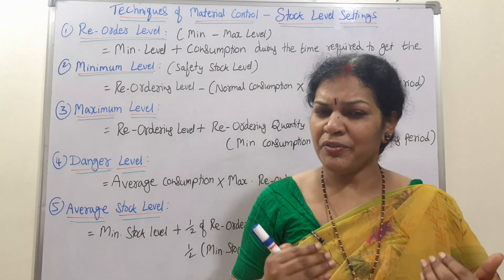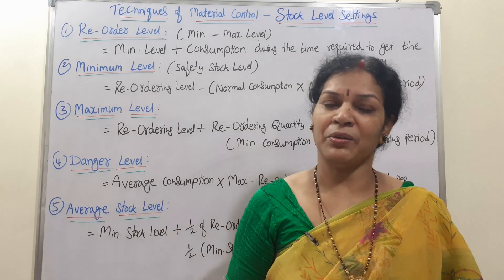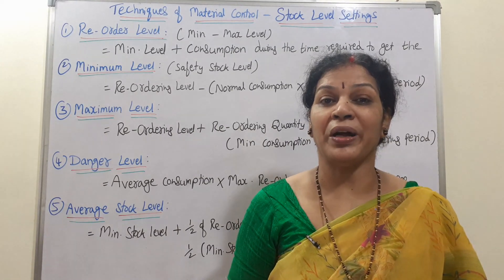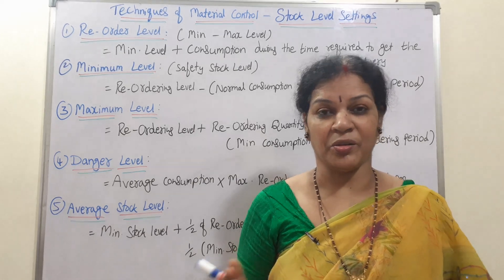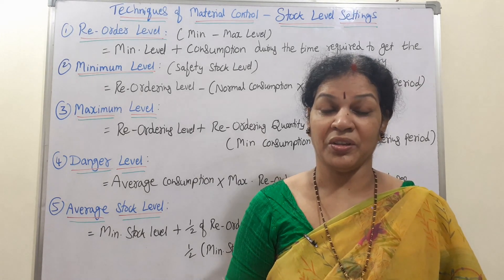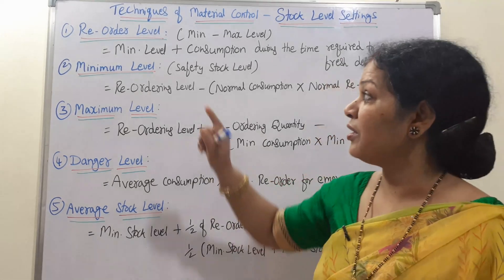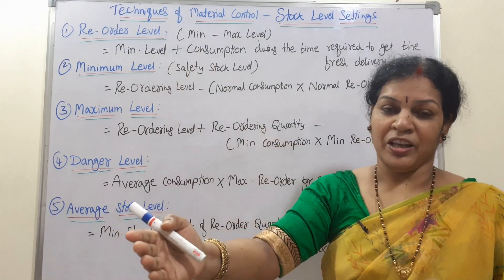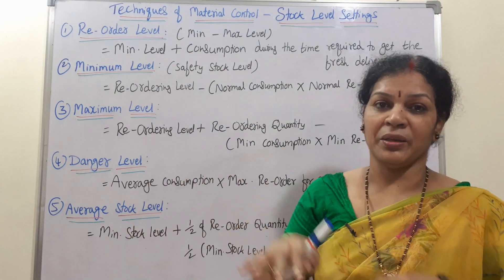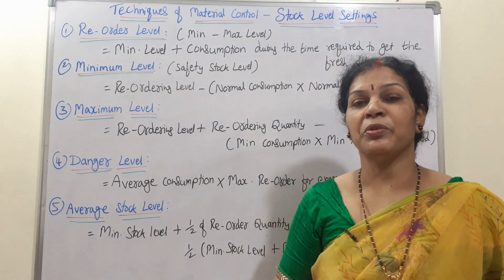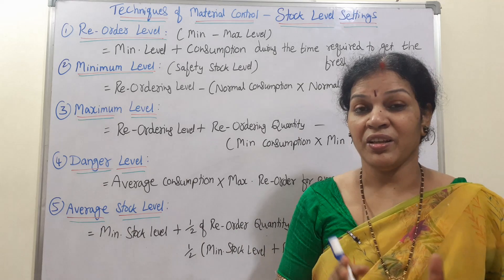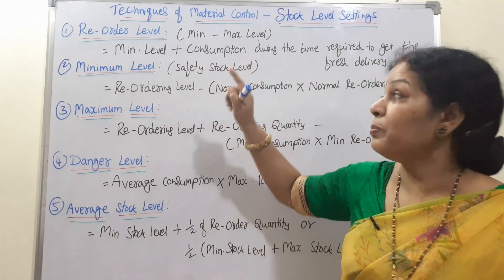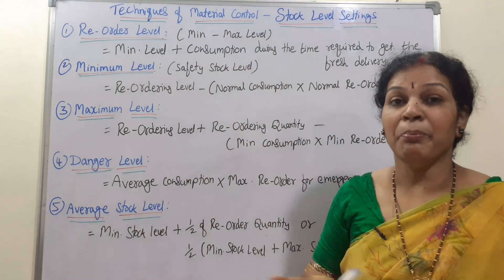To calculate every level setting, we have different formulas. You have to remember the formula and understand what it is — then automatically you can work it out. Reorder level means whenever material is completed, as per the requisition of the other party, they will be in a position to reorder that material. For that reorder, the material should be between the minimum and maximum level.